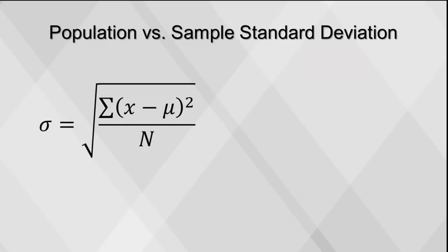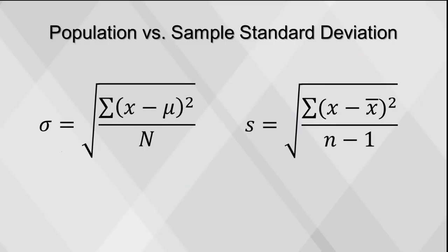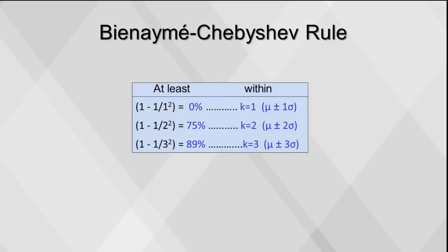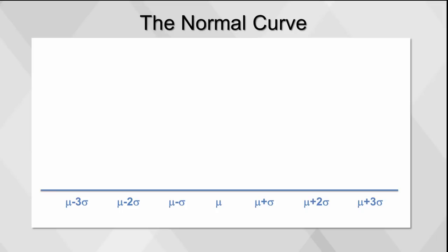These formulas are important to know well. While software can compute these for you, it's important to know how it's done using simple numbers. A very useful rule to know is that no matter what the shape of the distribution, 75% of values will lie within two standard deviations of the mean, while 89% will lie three standard deviations from the mean. So if someone gives you just these two pieces of information, you can make some predictions on where a new data point will lie.